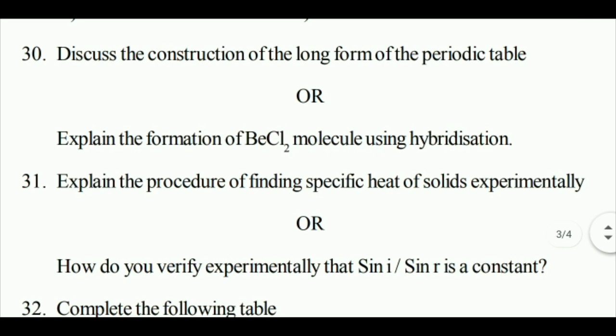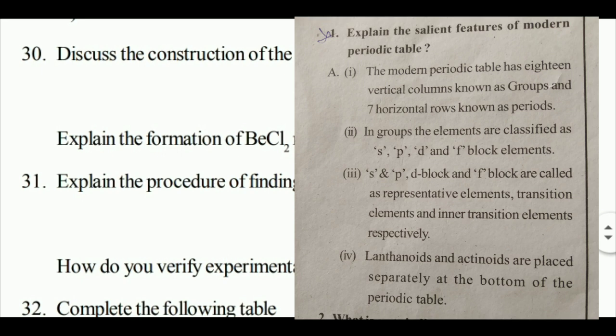Discuss the construction of the long form of the periodic table. The modern periodic table construction can be explained in four to six points. This is a very important question - every student should write this question properly.